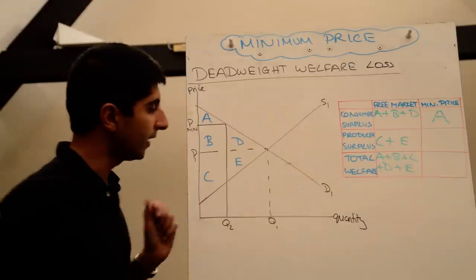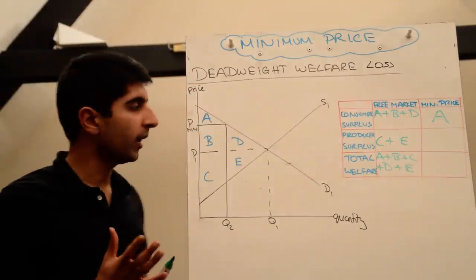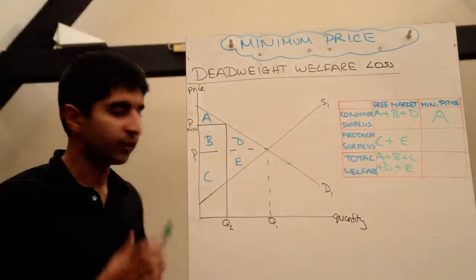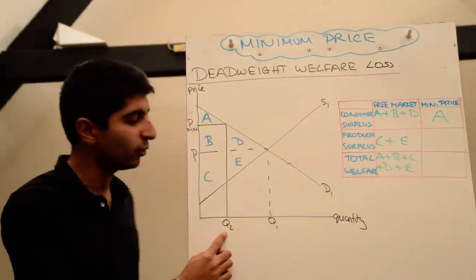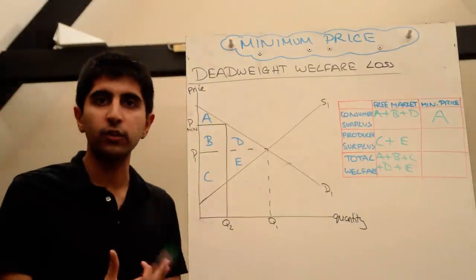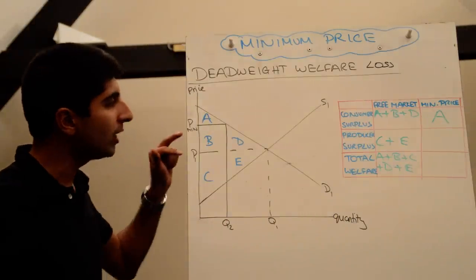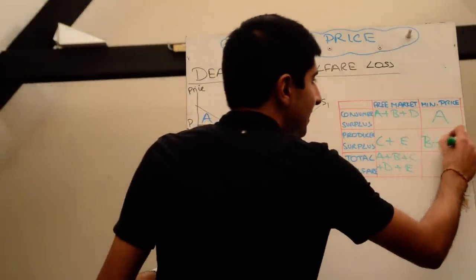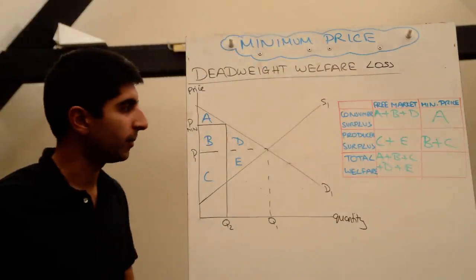The producer surplus is now the area above the supply curve but below the price. Now remember only Q2 is sold so we have to work within the confines of the quantity that's being sold. So that only allows for areas B and C to be collected in terms of producer surplus.